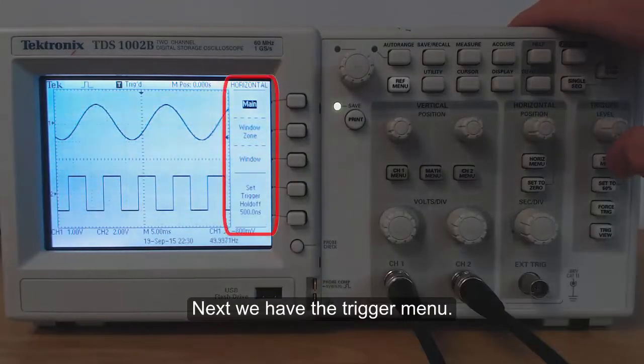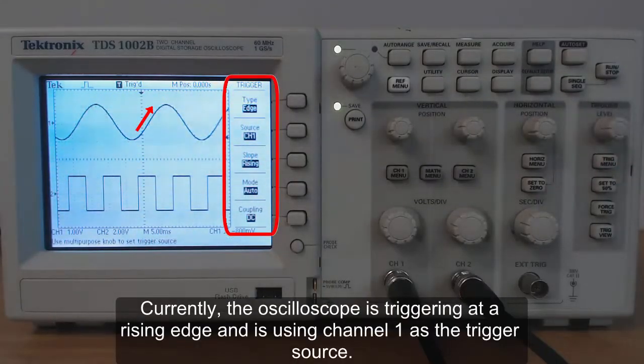Next we have the trigger menu. Currently the oscilloscope is triggering at a rising edge and is using channel 1 as a trigger source.